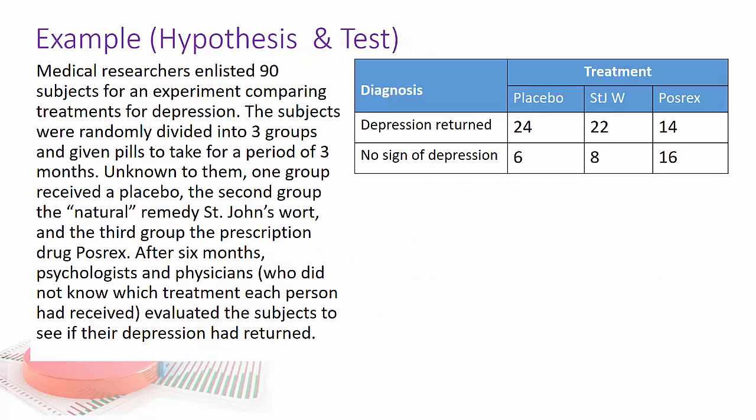So let's take a look at an example. Medical researchers enlisted 90 subjects for an experiment comparing treatments for depression. The subjects were randomly divided into three groups and given pills to take for a period of three months. Unknown to them, one group received a placebo, the second group the natural remedy St. John's wort, and the third group the prescription drug Posrex. After six months, psychologists and physicians who did not know which treatment each person had received, so this is a double blind, evaluated the subjects to see if their depression had returned.